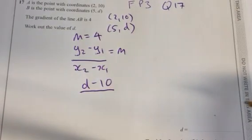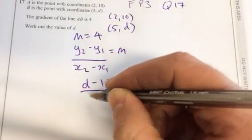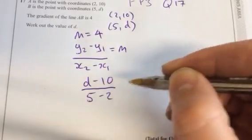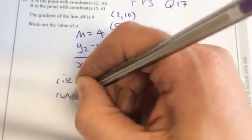So d minus 10 over 5 minus 2. So it's the rise over the run.